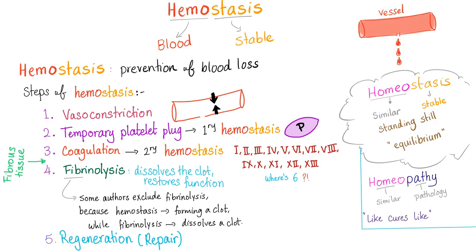As you know, hemostasis is the process of preventing blood loss by forming a clot. It has many steps: vasoconstriction, platelet plug, coagulation, then fibrinolysis. Aspirin works on preventing the platelet plug step. TPA works on destroying the clot, leading to fibrinolysis. Anti-fibrinolytic therapy — the topic of today's video — will preserve and maintain the clot and prevent fibrinolysis.